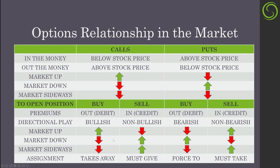Some quick patterns to notice: buying call options has only one way to make money — an upward market. But if you sell call options, there are two ways to make money: if the market goes down and if the market goes sideways. If you buy puts, there's only one way to make money — when the market goes down. And if you sell puts, there are two ways to make money: if the market goes up and if the market goes sideways.